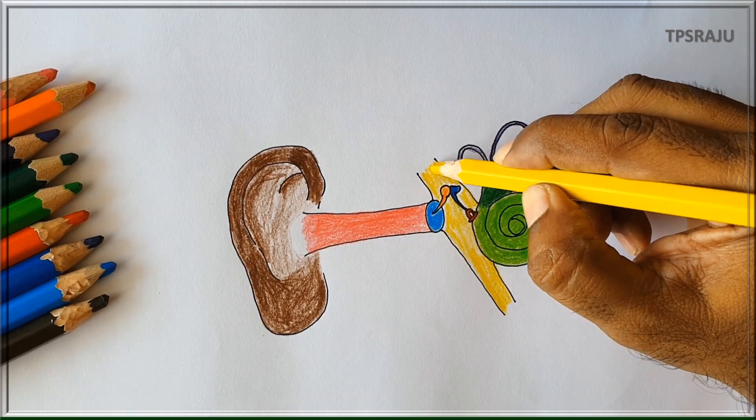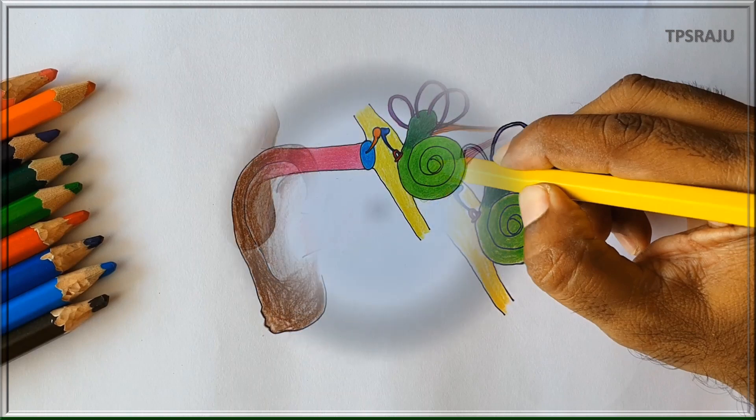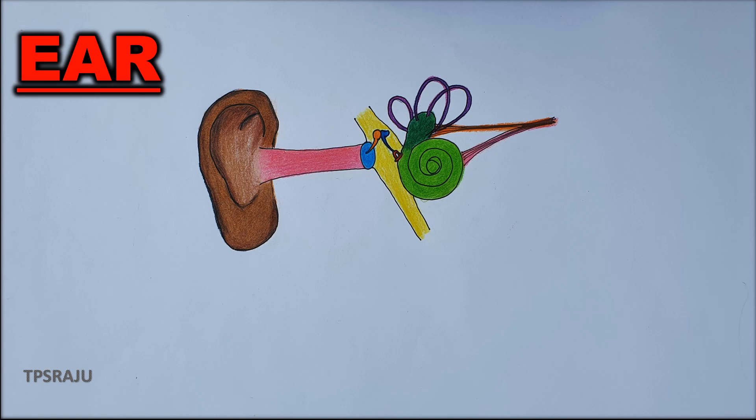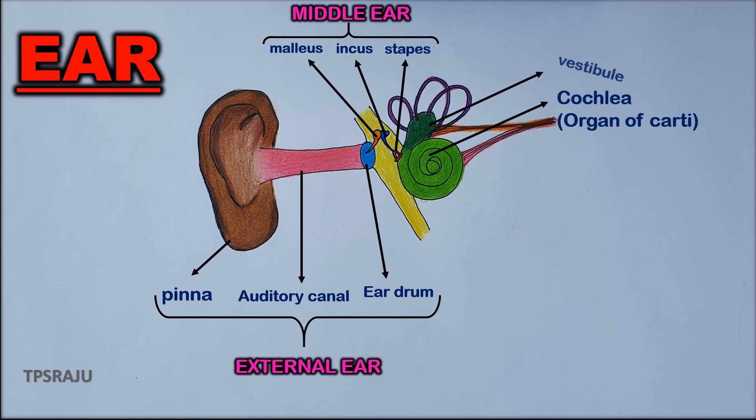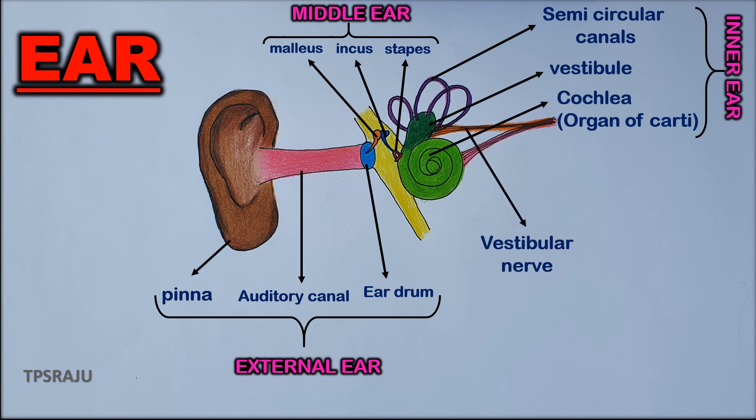If we apply the colors once again perfectly, it will appear very beautiful. Finally, shall we label the parts. These belong to inner ear: vestibular nerve, cochlear nerve, auditory nerve, and eustachian tube.